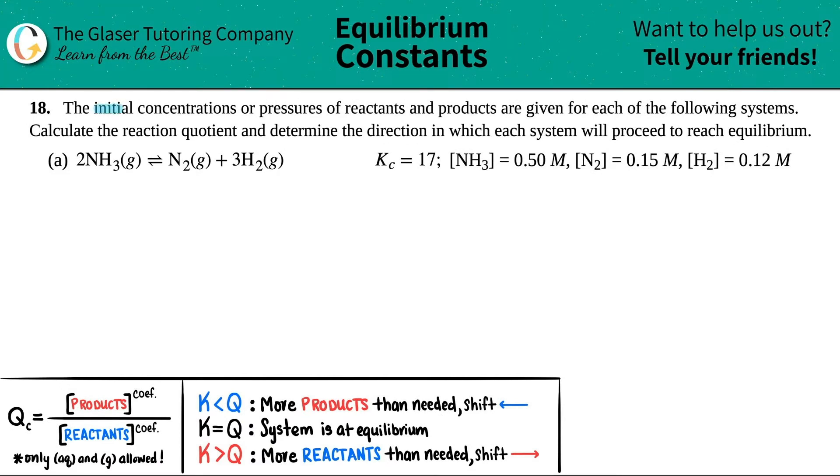Number 18, the initial concentrations or pressures of reactants and products are given for each of the following systems. Calculate the reaction quotient and determine the direction in which each system will proceed to reach equilibrium. Then we have letter A.